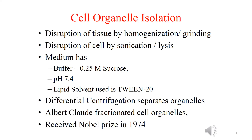In order to study different cell organelles, they must be isolated. The procedure begins with disruption of the tissue by homogenization or grinding, which releases the cells. The cells are then disrupted by sonication or lysis. The medium used is a sucrose buffer of 0.25 molarity at pH 7.4, and a lipid solvent between 20 is also used.